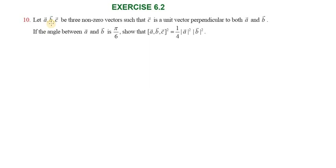Hi students, greetings from Success Education Academy. Question 6.2, number 10. Let A vector, B vector, C vector be 3 non-zero vectors such that C vector is a unit vector perpendicular to both A vector and B vector.